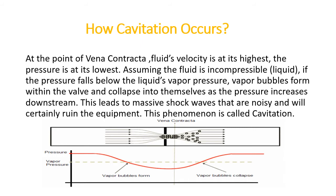From the equation of continuity and Bernoulli's theorem, we learned that at the Vena contracta, fluid velocity is at its highest, and this highest velocity is at the expense of the pressure energy of the liquid. At the Vena contracta, as you can see in the picture, velocity V is maximum and pressure P is at its lowest. Pressure gradually decreases near the Vena contracta, reaching the lowest amount at that point.